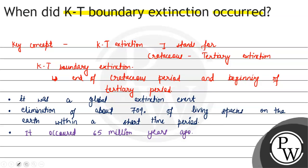KT extinction occurred 65 million years ago. An asteroid which was about 15 km in diameter hit the earth. As a result, vegetation was destroyed, making it very difficult for wild animals and other species to survive. This caused a massive mass extinction event.